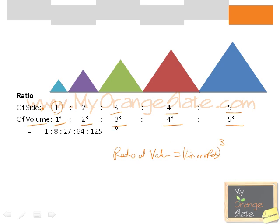Thus, the volume of these five cones would be in the ratio 1:8:27:64:125.